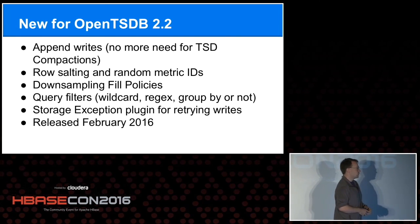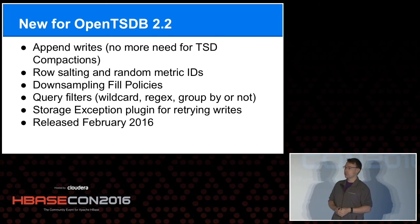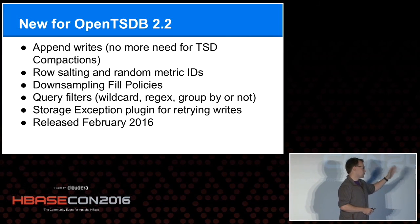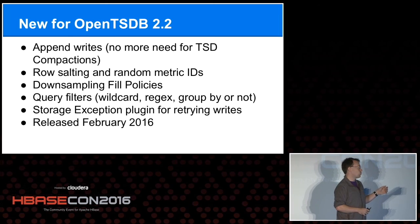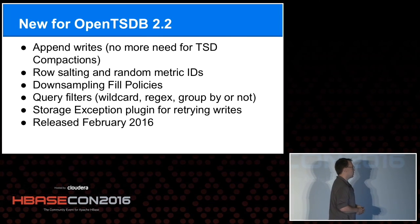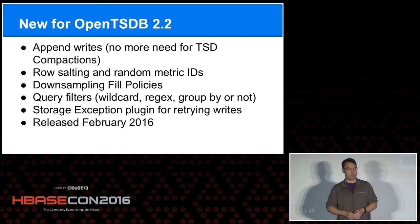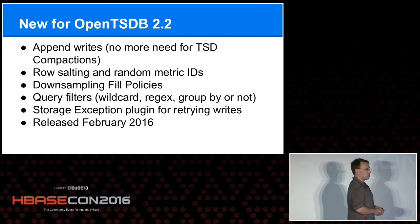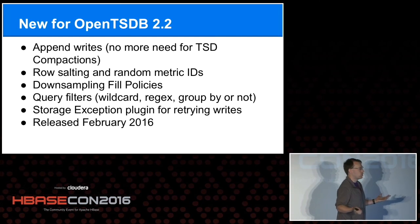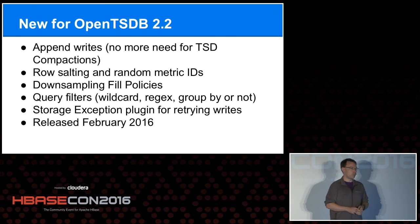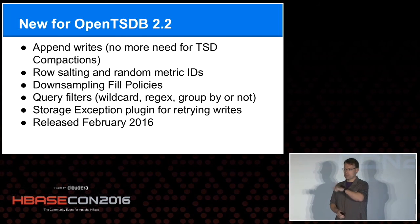We added row salting - everybody does that. We also support random IDs if you want to turn it on, and that helps distribute the write load a ton. We added some query filters with wildcard and regex. We've got a storage plugin and an exception plugin - so if HBase is down for some reason, you can still feed data points to your TSDs and then queue them to disk or write them back to a queuing system. Kafka is pretty popular. We use Kafka at Yahoo in our pipeline, so any time there's a rolling upgrade or we can't write, we put it back in there.